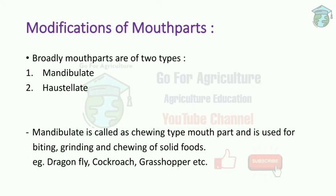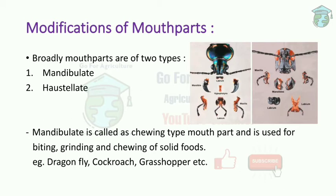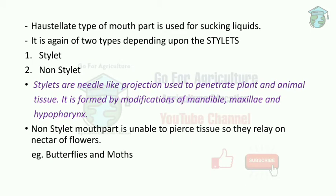The first haustellate sub-type is stylet-bearing, for example mosquitoes. The second is non-stylet, where the mouth parts are unable to pierce tissue, so these insects rely on food sources like flower nectar — for example butterflies and moths. Rasping and sucking type is also a non-stylet mouth part. The haustellate type is further classified into three types: piercing and sucking (found in grasshoppers and cockroaches), siphoning type, and sponging type — where the insect uses its mouth to sponge food and suck liquid, for example house flies.